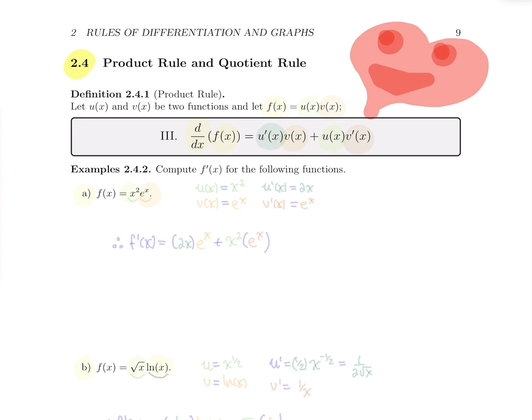If you have a function that is a quotient of two equations, it's not the quotient of the two derivatives. And be warned: if on a test I give you a function that is a product and you compute the derivative of the two terms and just multiply those two derivatives, your mark will be zero. So you have to see that this is a product or a quotient — and if there's a product, there's a rule called the product rule. If you have a quotient, there's a rule called the quotient rule.